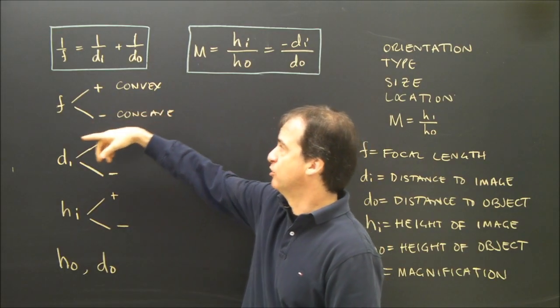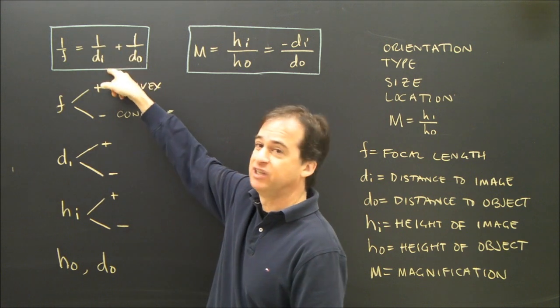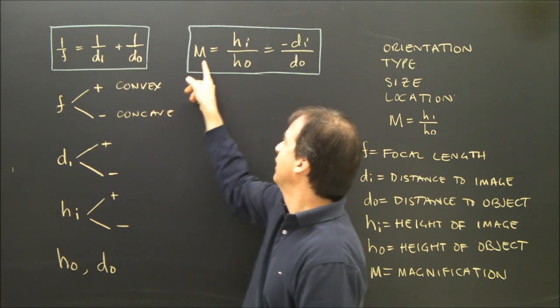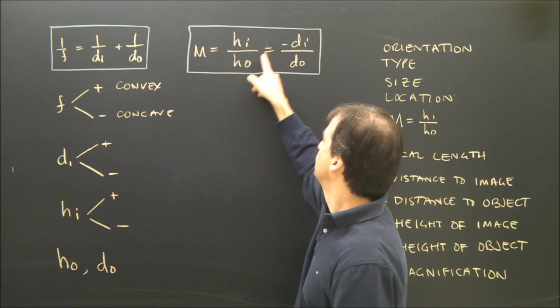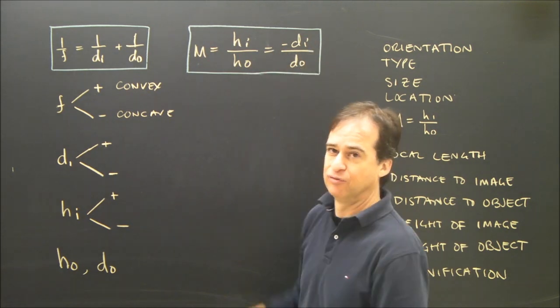Here are the two formulas we're going to use. 1 over F is 1 over DI plus 1 over DO, and M is HI over HO, which is equal to negative DI over DO.